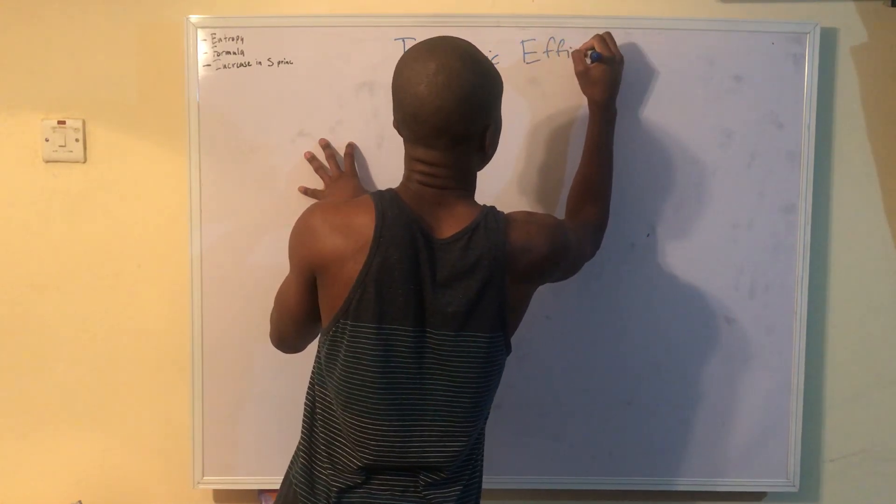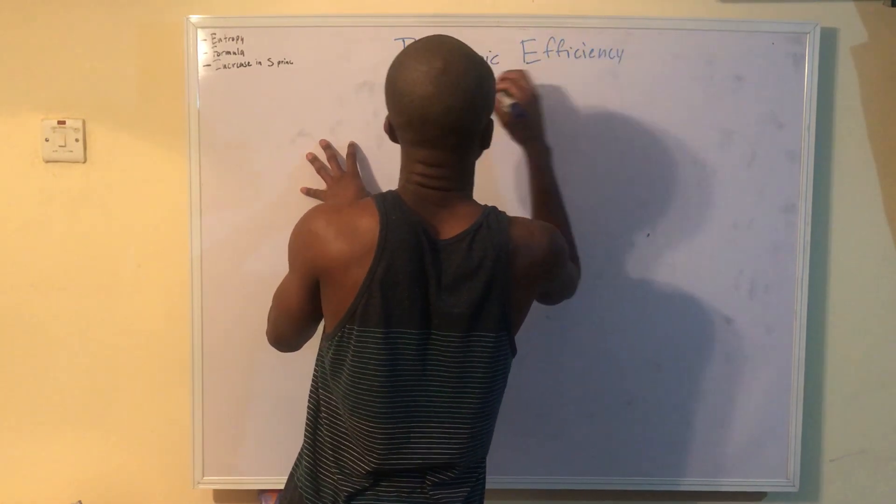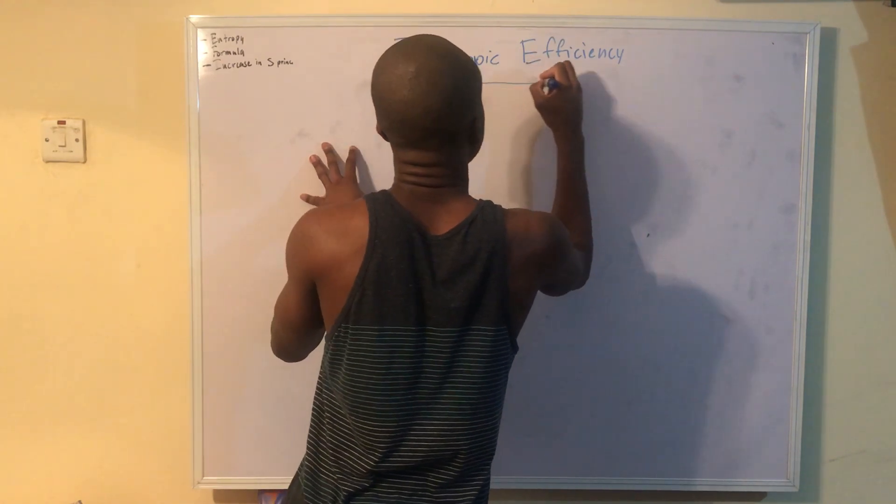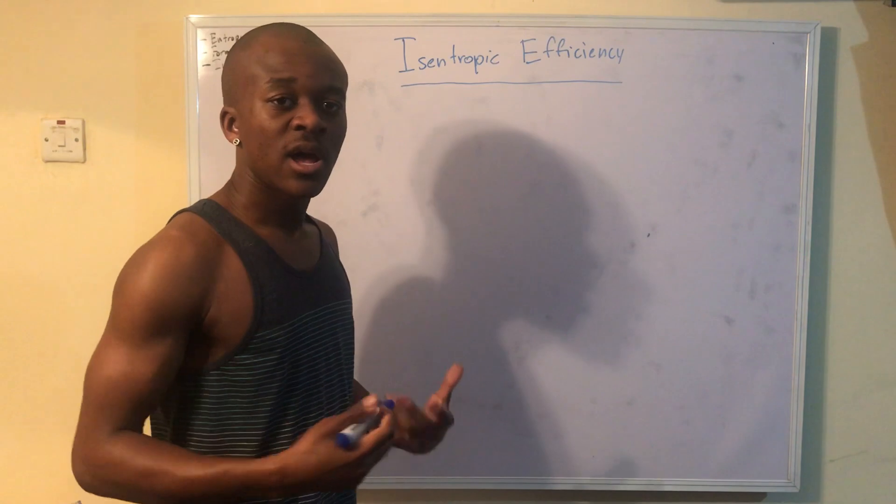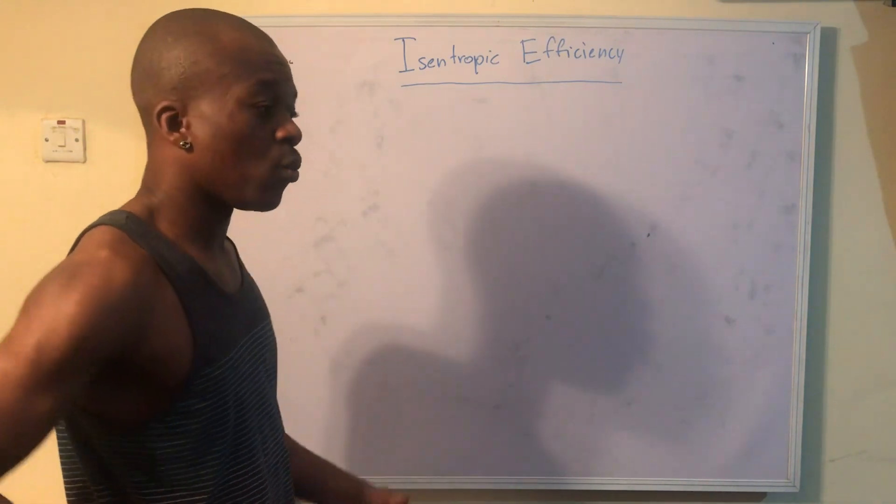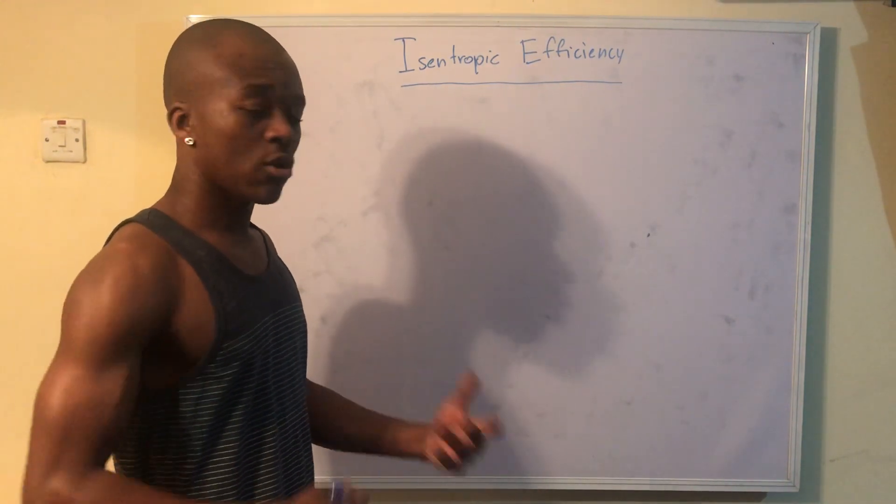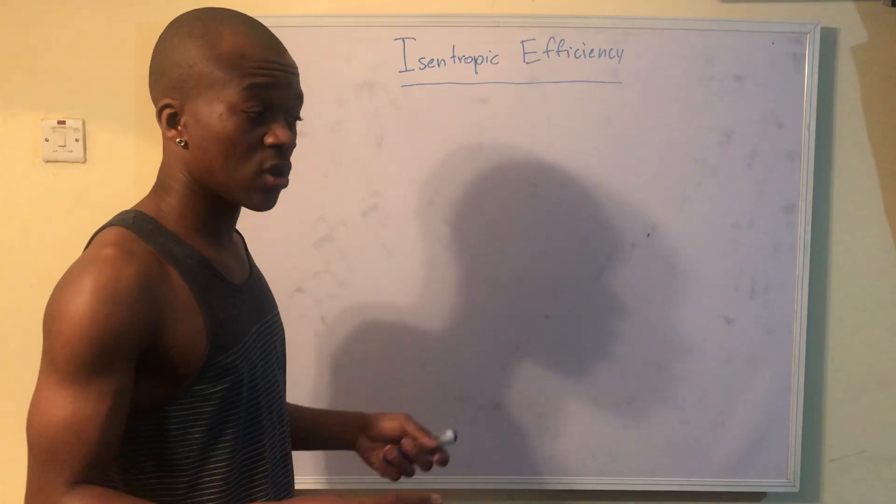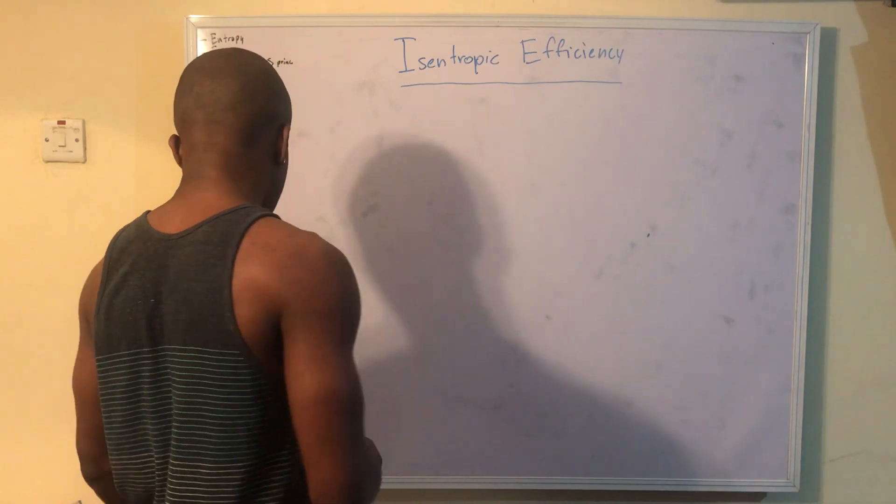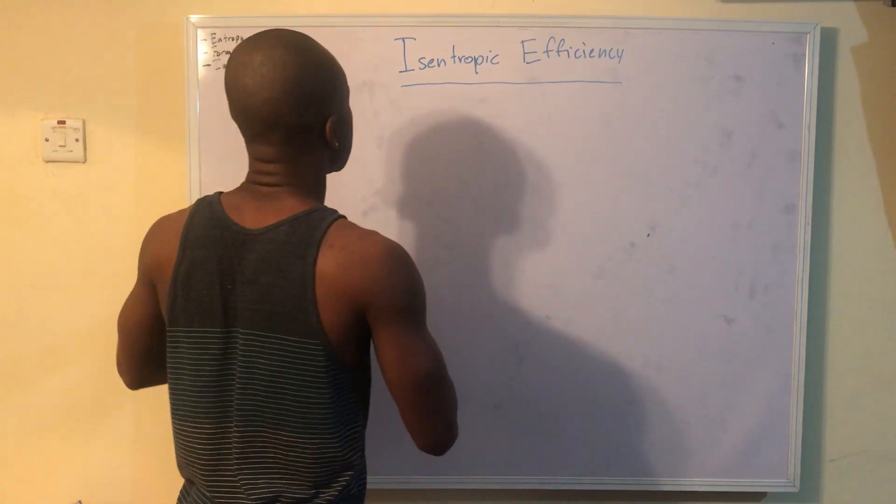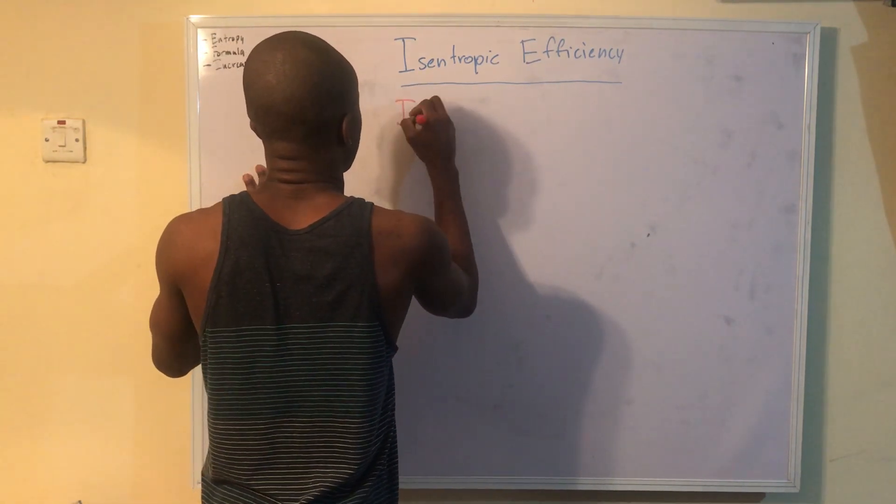Basically, those same turbines, compressors that we dealt with before - remember I talked about when we have reversible things, we want to see how close we are to perfection. So these isentropic devices are sort of like perfect devices. Now, we know that isentropic means adiabatic and reversible.